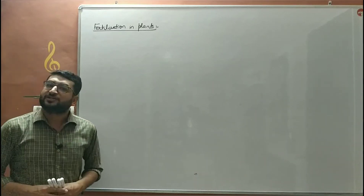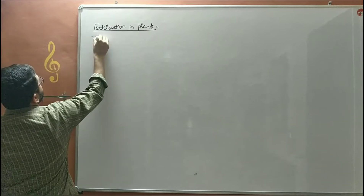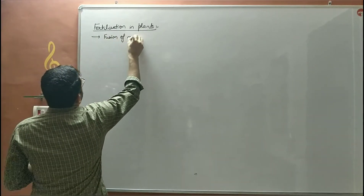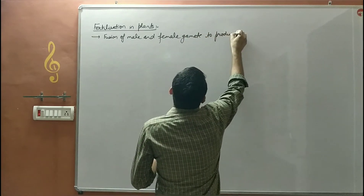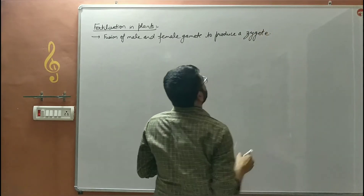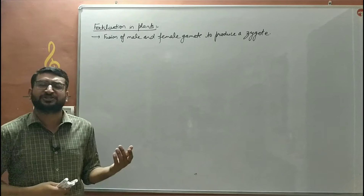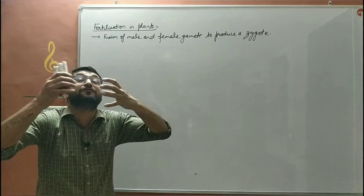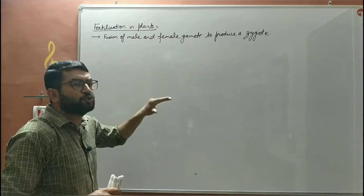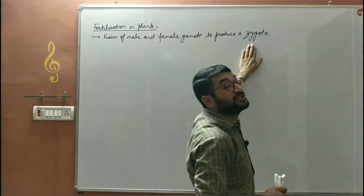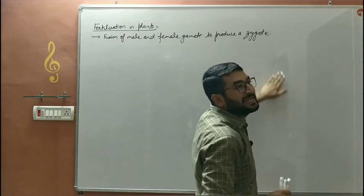Hello children, in this video we will discuss fertilization in plants. First, we'll discuss what is fertilization. The fusion of male and female gametes to produce a zygote — that process is known as fertilization. When the gametes are transferred, those gametes will fuse with each other, their nuclei will mix, and the first diploid cell — the first cell possessing two sets of chromosomes — will be formed. That cell is known as a zygote.